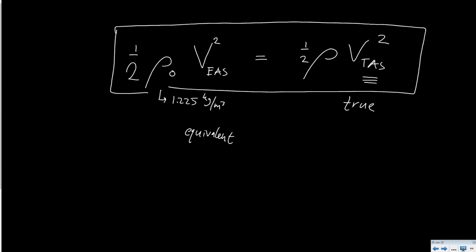For instance from this relation it shows that if we want to know the true air speed, we basically take the square root of the density at sea level divided by the true density,